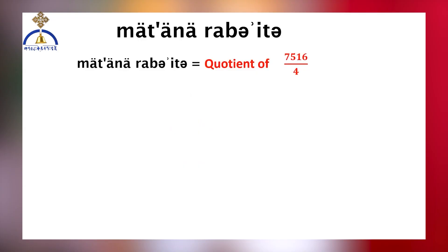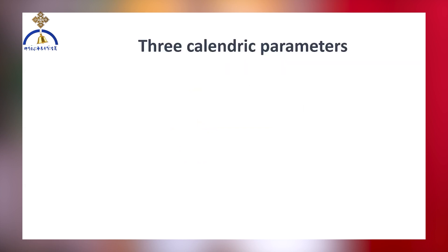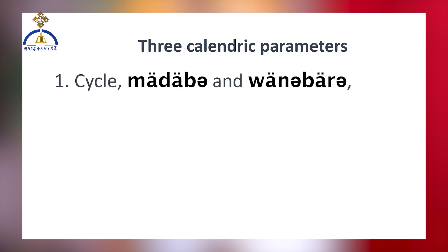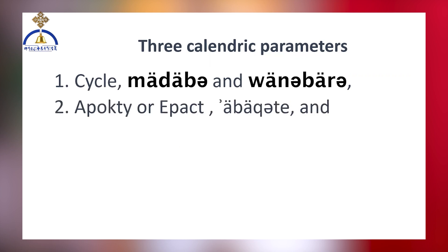To determine the starting days of movable fasts and feasts each year, three calendrical parameters must be calculated. First, cycle, which is related to Amharic terms Med'ev and Wembar. The second one is Apocti, or Epact, which is translated as Abekhti, and the third one is Med'khti.